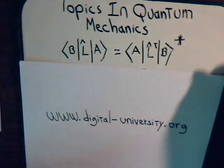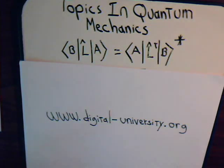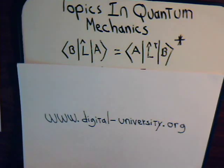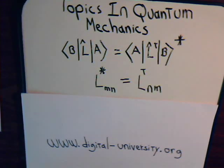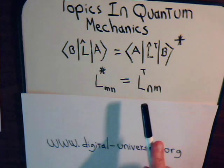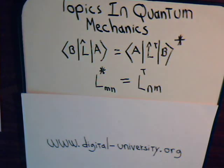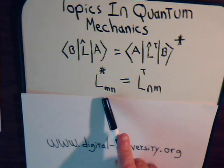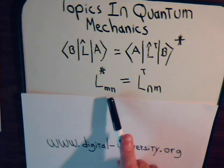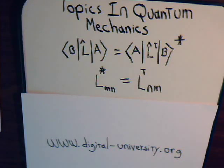This was the standard definition and we pretty much covered what that entails in the previous video. One of the outcomes was that if we have a linear operator in matrix form, it is related to its adjoint by taking the complex conjugate and also interchanging the rows and the columns.